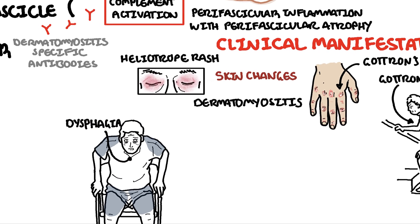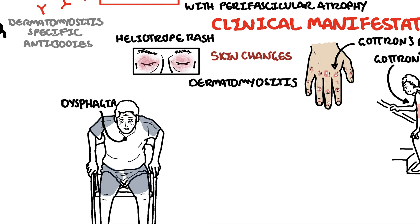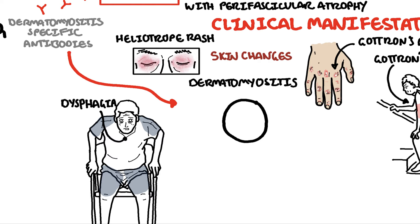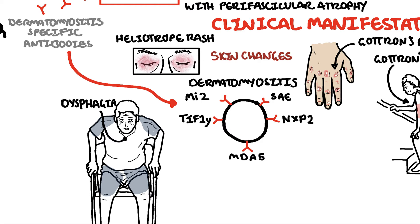There are other clinical manifestations of dermatomyositis that are only seen in those with certain dermatomyositis-specific antibodies. These antibodies can be measured in the blood and also help with diagnosis. Dermatomyositis-specific antibodies include anti-MI2, anti-small ubiquitin-like modifier activating enzyme (SAE), anti-TIF1-gamma, anti-NXP2, and anti-melanoma differentiation-associated protein 5 (MDA5).